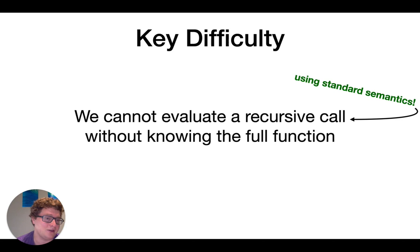But that's actually only true for using standard semantics. So our approach is just, let's not use standard semantics. This brings us to our notion of angelic execution. In standard semantics, we have E big steps to V to say that E evaluates to V.